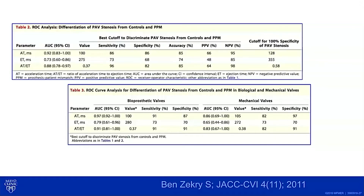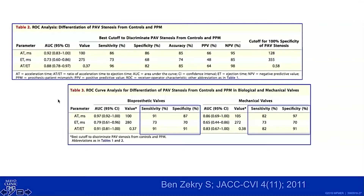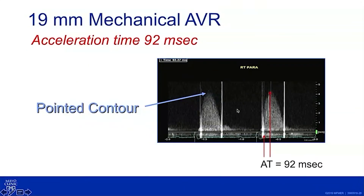Then in 2011, they published a larger paper with sensitivity, specificity, and accuracy for using the acceleration time and the acceleration time to ejection time ratio — which ended up being the more accurate measure. For mechanical valves, acceleration time alone gave a sensitivity of 82% and specificity of 97%. Using the AT/ET ratio gave sensitivity and specificity of 82% and 91%. She had a pointed contour and an acceleration time of 92 milliseconds, falling below the 100 ms cutoff, indicating likely functional rather than pathologic obstruction.